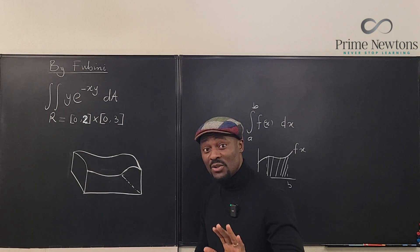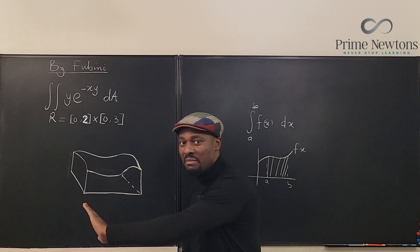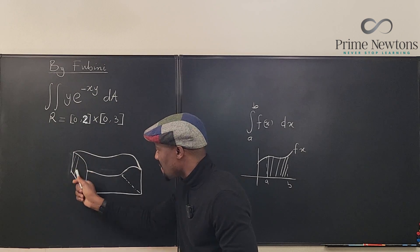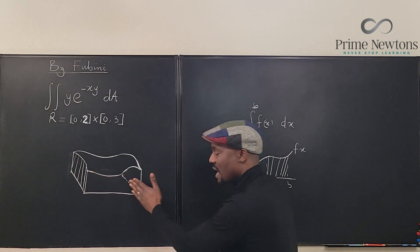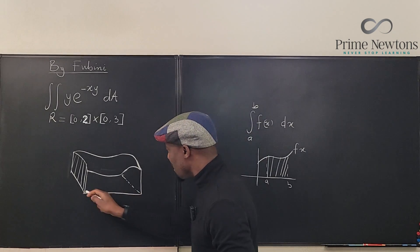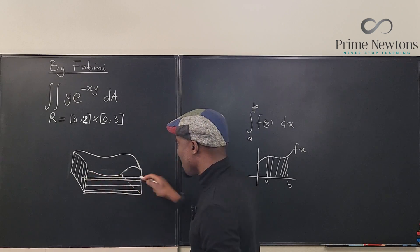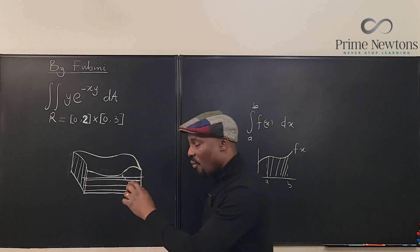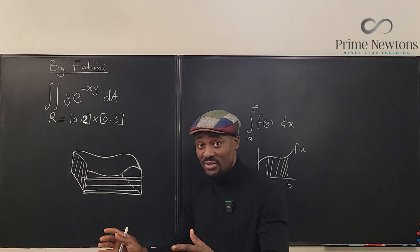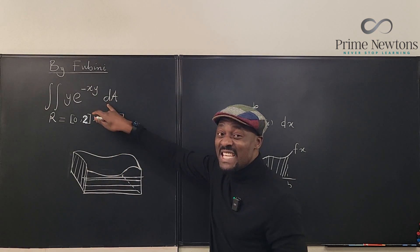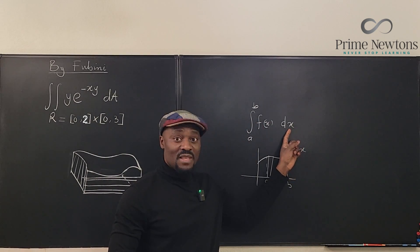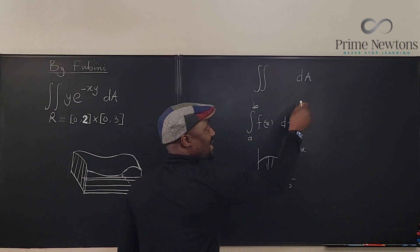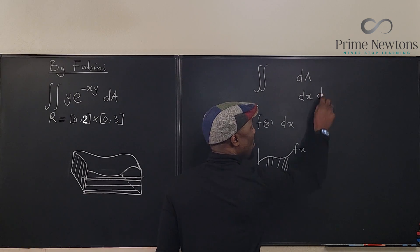Remember that whenever you want to calculate volume, all you need is to find area and multiply by depth, height, or length. So we could find the area of this side and then integrate the area over the entire length. Or we could find this area here and push it all the way to the other side by integration. Whatever you do, you have to cover both directions — and that's the point of dA.